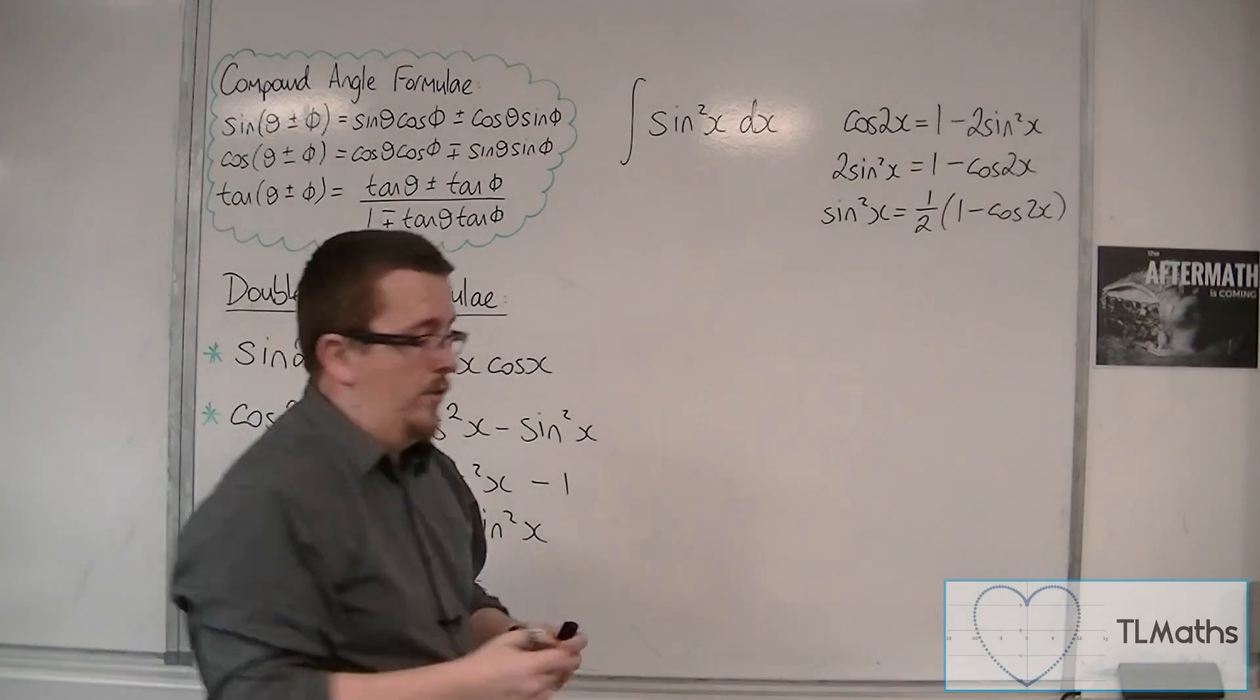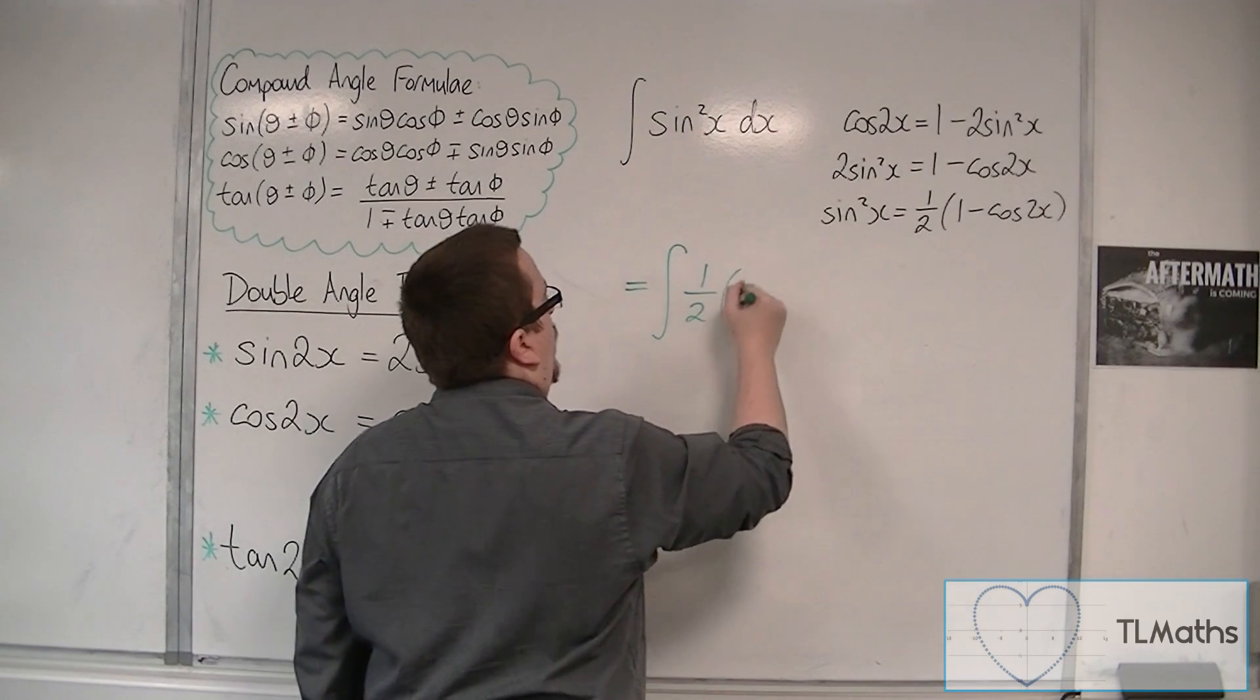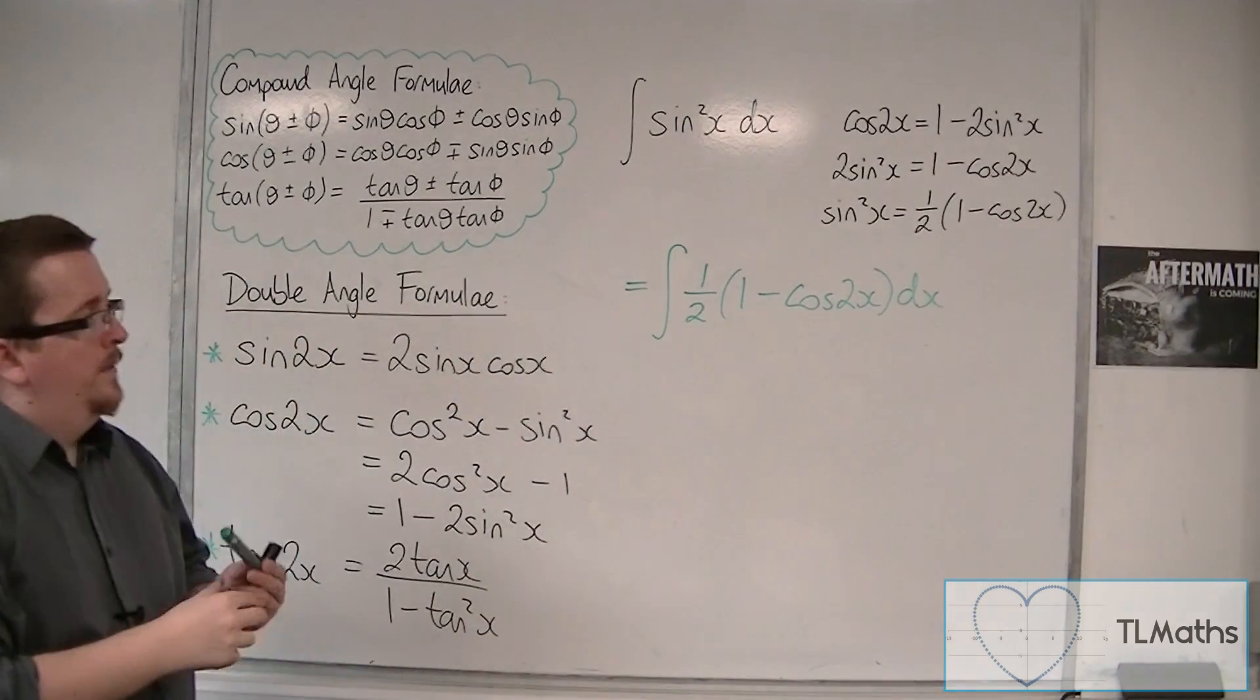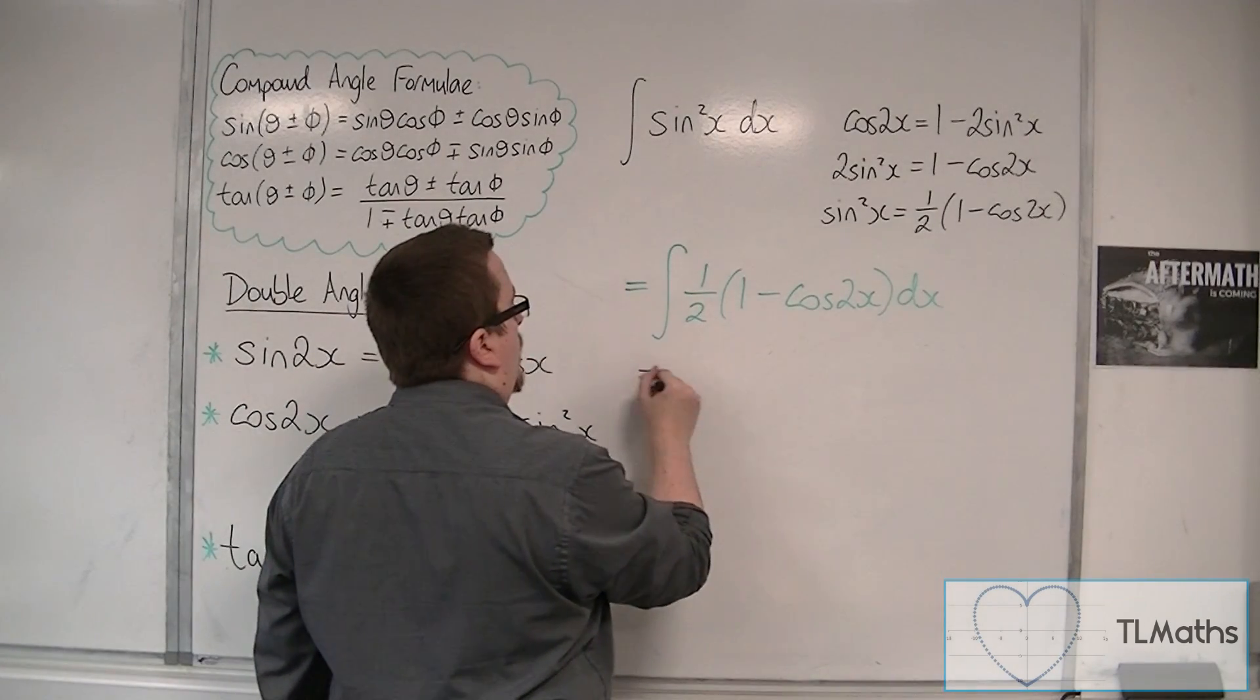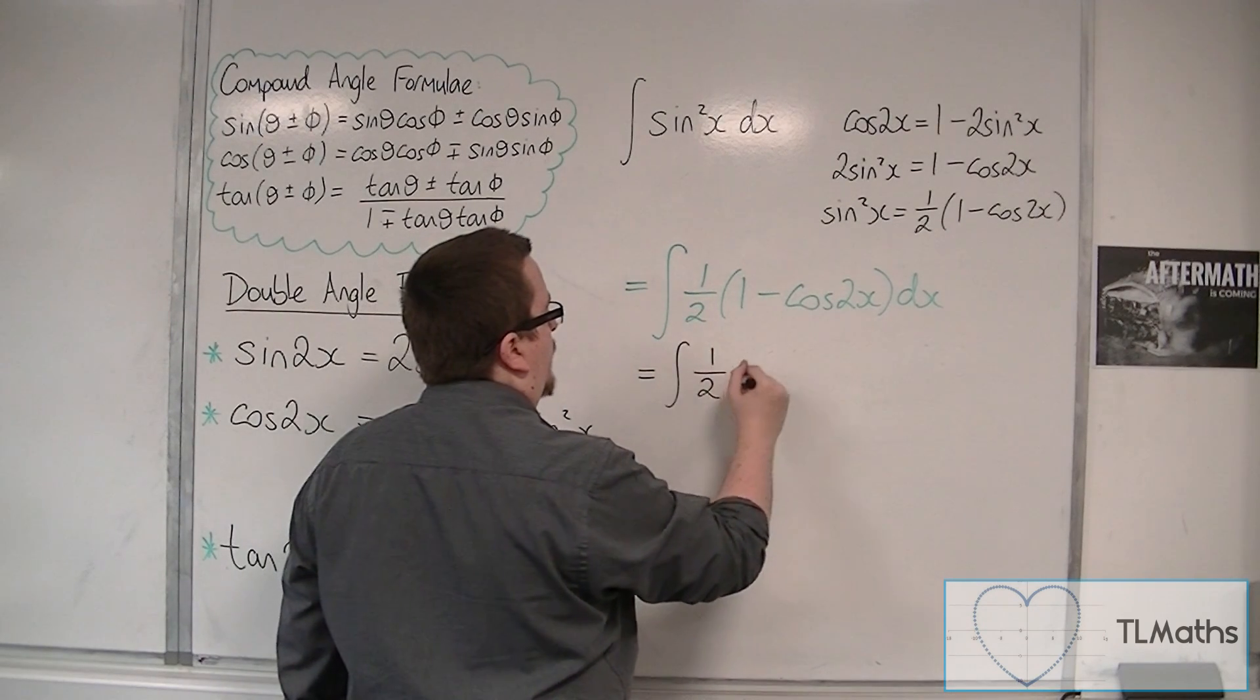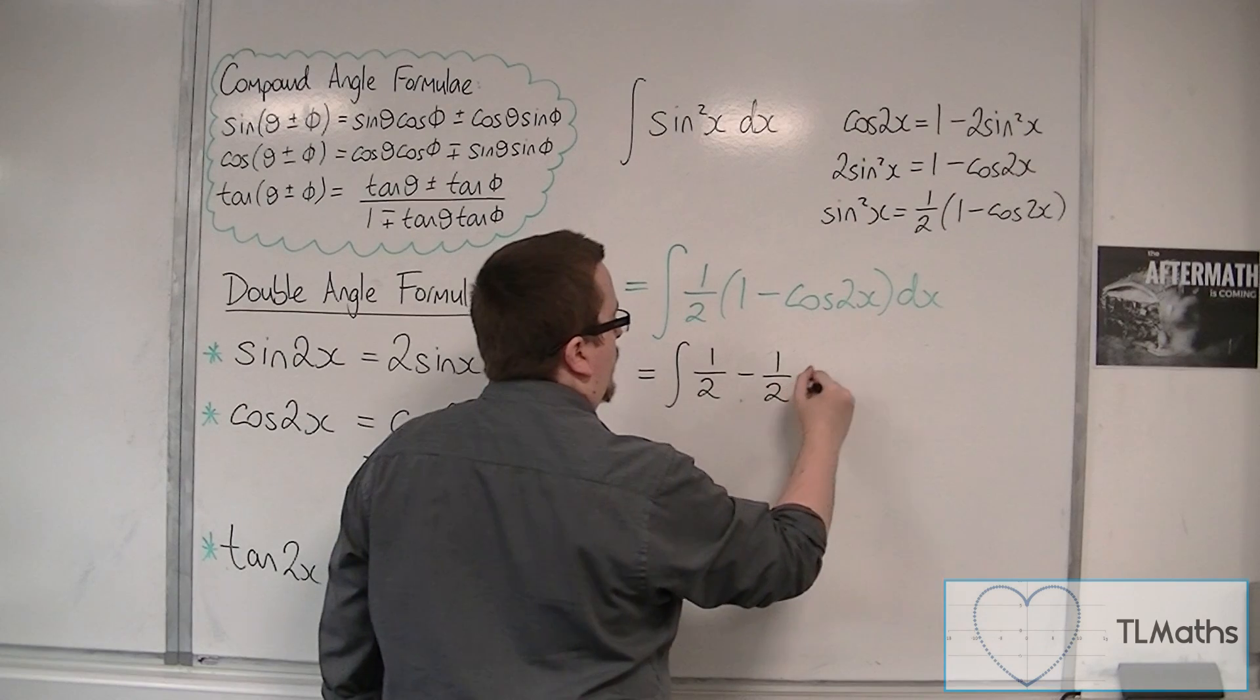So we can now replace the sine squared in the integral with 1 half 1 minus cos 2x. So what I'll do is I'll leave the half inside. Let's multiply through. So we're going to have 1 half times 1 and 1 half times cos 2x. So minus 1 half cos 2x.